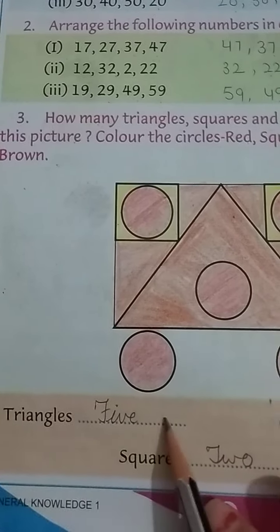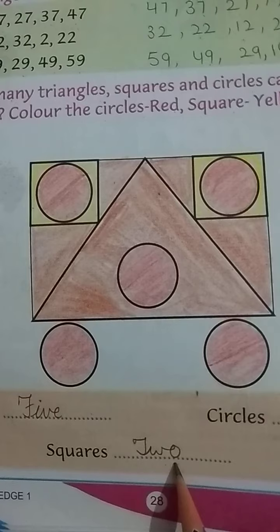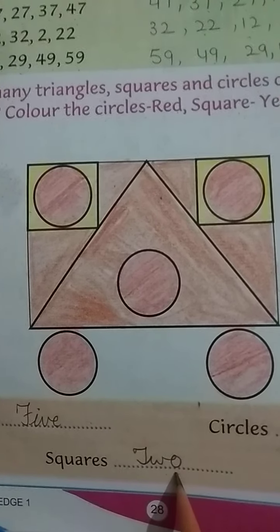Yaha pe kya likho ghe? Triangle five. Circle b, five. And stairs, two. Understand? Thank you.